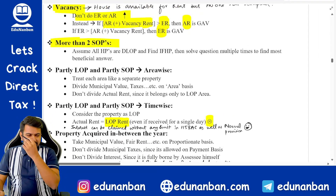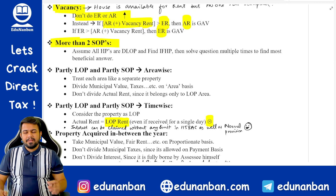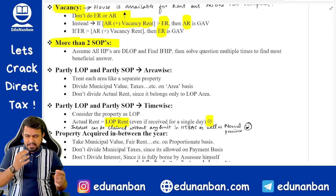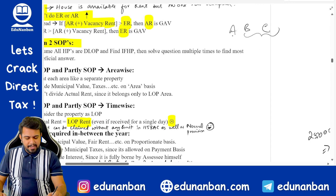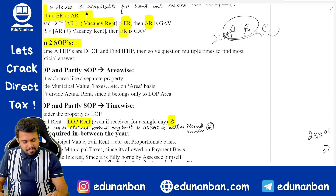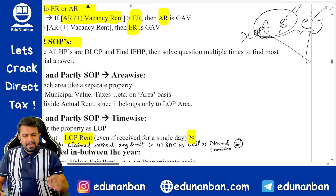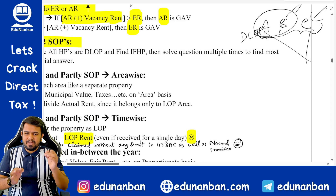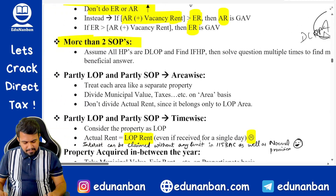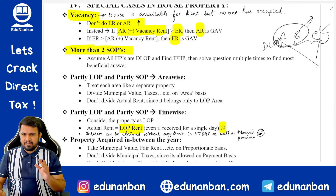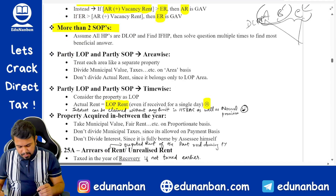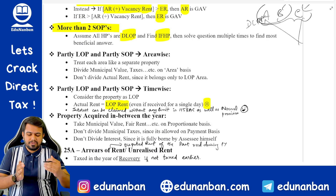If there are more than two self-occupied properties, say A, B, and C, solve the question in different combinations: first assume B and C are SOP and A is DLOP, then A and B as SOP with C as DLOP, then A and C as SOP with B as DLOP. Among all three answers, the one with the lowest income is the final answer, as it is most beneficial to the assessee. You will understand this better when you solve the actual questions from the study material.